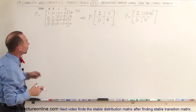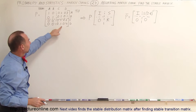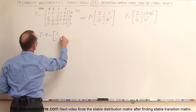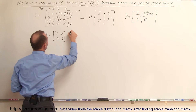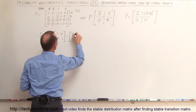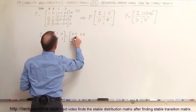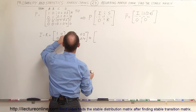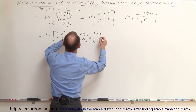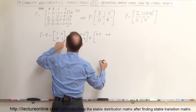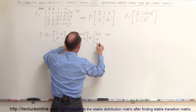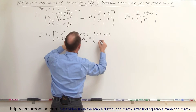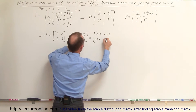To find the stable matrix we first have to take I, the identity matrix, and subtract the R matrix from that. So I minus R equals the identity matrix 1,1,0,0 minus the R matrix, which is 0.5, 0.2, 0.1, and 0.4. When we subtract the two we get: 1 minus 0.5 is 0.5, 0 minus 0.2 is minus 0.2, 0 minus 0.1 is minus 0.1, and 1 minus 0.4 is 0.6.